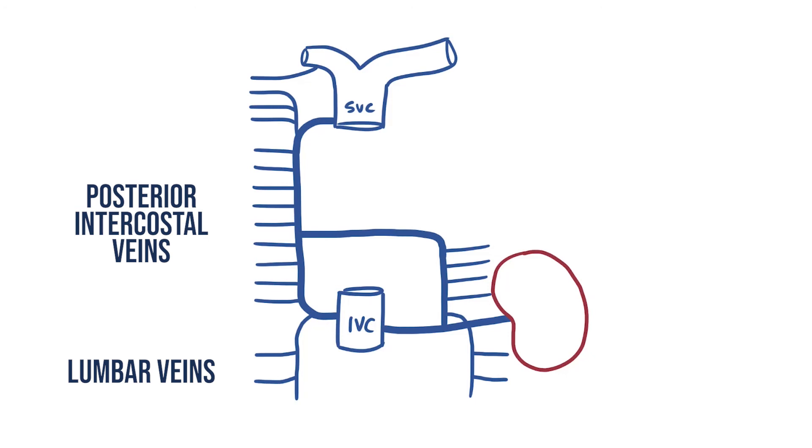So what about these upper intercostals? As on the right, the first intercostal drains directly into the brachiocephalic. The second, third and fourth again form a superior intercostal vein, only this time it drains into the brachiocephalic as well.